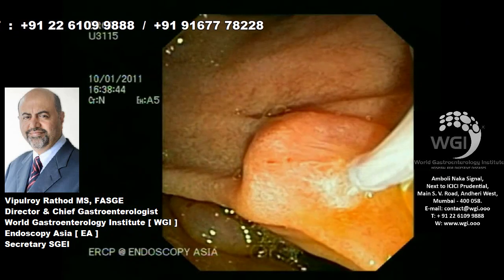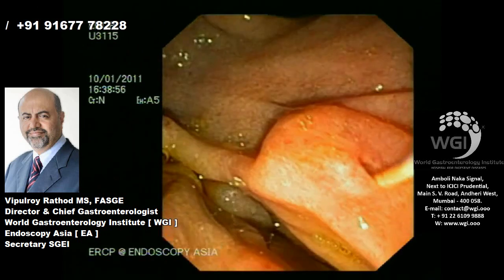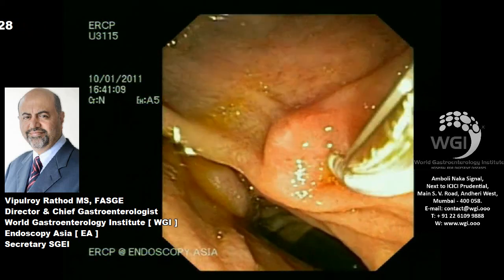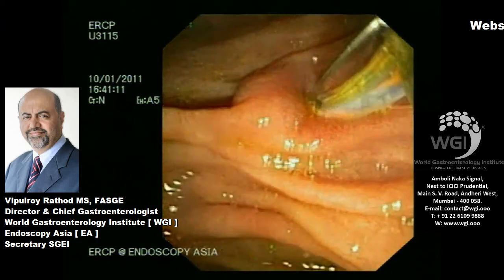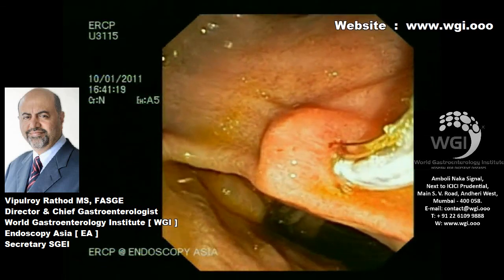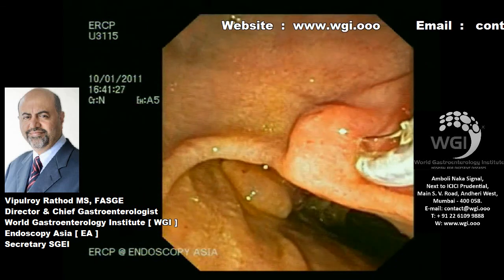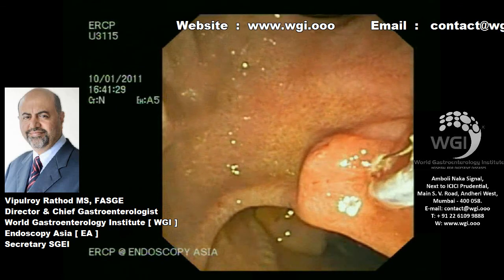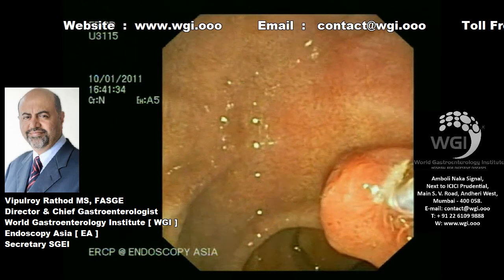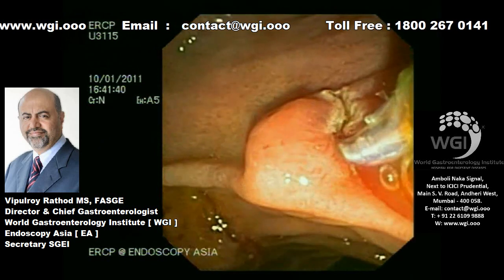We will proceed with a formal minor papilla sphincterotomy. As you can see, we have done the major papilla sphincterotomy, and we are now cannulating the minor papilla with a sphincterotome. In a very controlled manner, we perform minor papilla sphincterotomy — the vision should be clear. We use a very short burst of Endocut energy, the same setting I use for biliary sphincterotomy. The full minor papilla sphincterotomy is achieved.